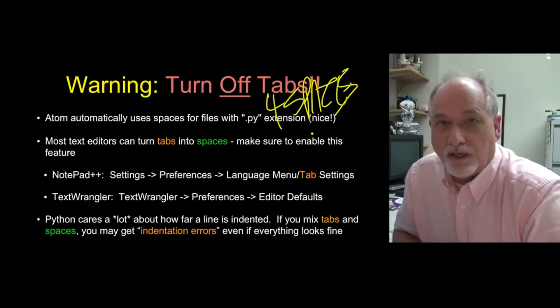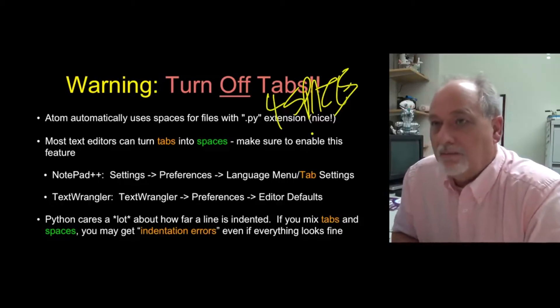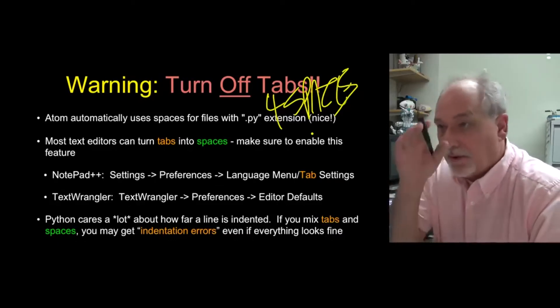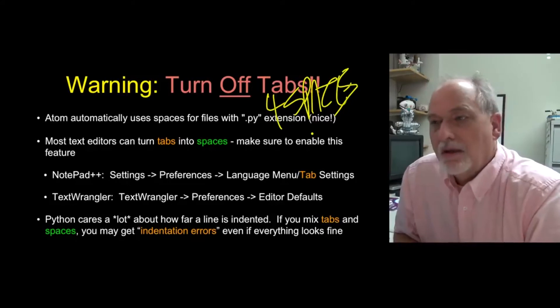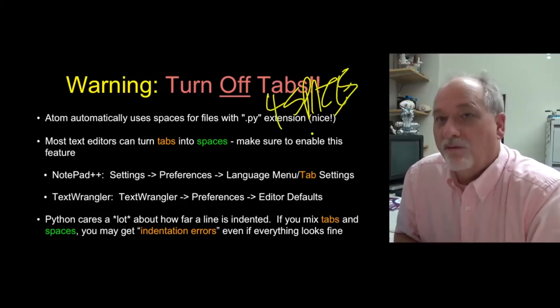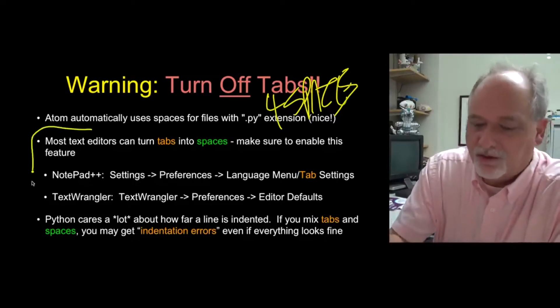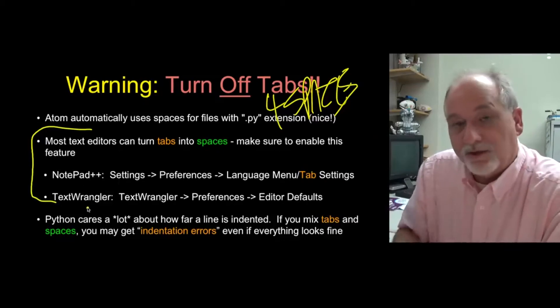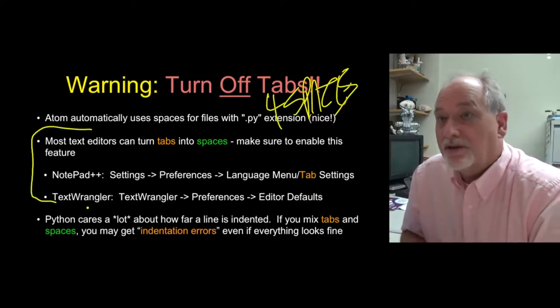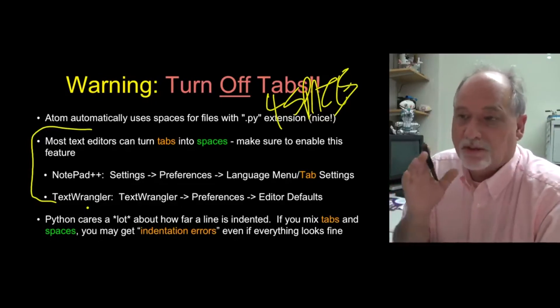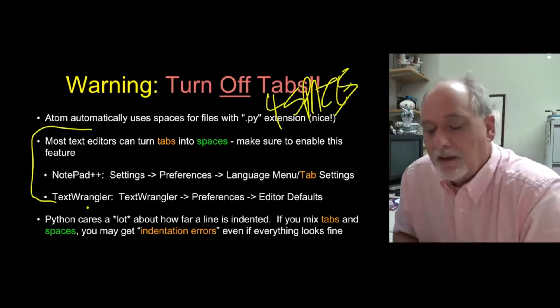And we have this instinct of wanting to hit the tab key to move in four spaces. Now, the problem is that it might look the same on your screen. A tab and four spaces might line up the same place depending on how tabs are set. But Python can get confused by that. So we tend to avoid using actual tabs in files. And so most programming text editors, like if you're using Notepad or TextWrangler, there's a place to set the tabs to say, don't put tabs in this document. But every time you hit tab, move over four spaces. So you hit a tab, but it's like space, space, space, space, space.